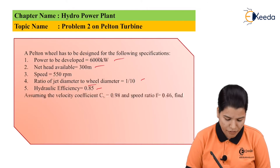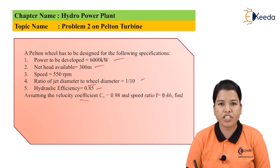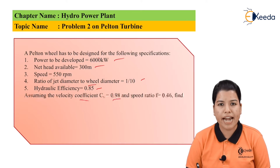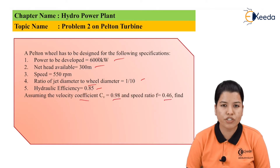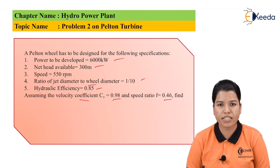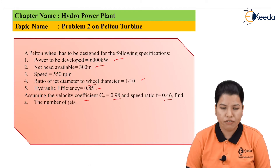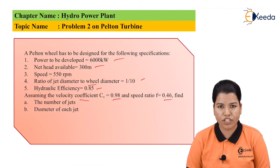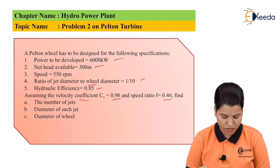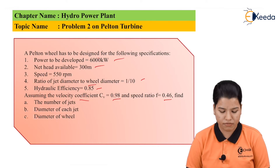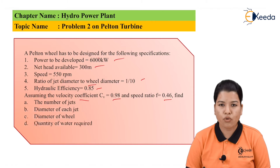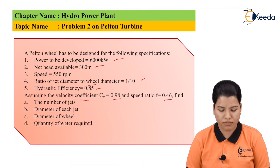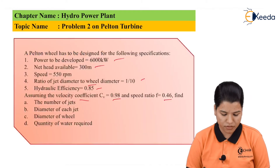Hydraulic efficiency is 0.85. Assuming the velocity coefficient Cv is equal to 0.98 and speed ratio F is equal to 0.46, find: first, number of jets; then diameter of each jet; diameter of the wheel; and quantity of water required.